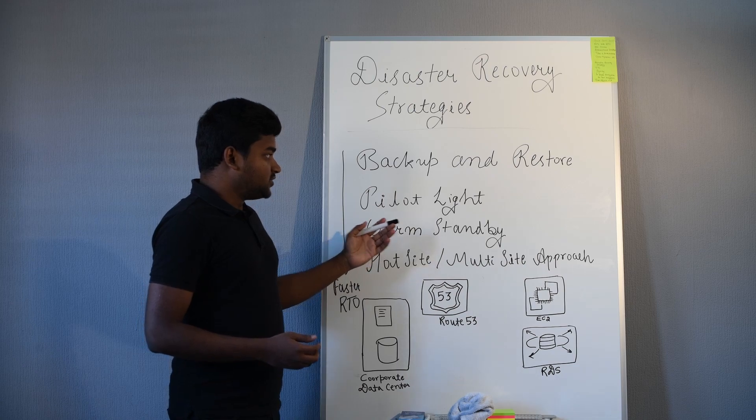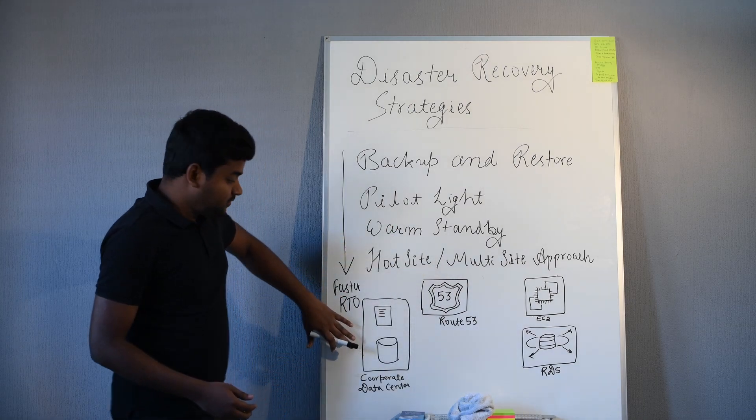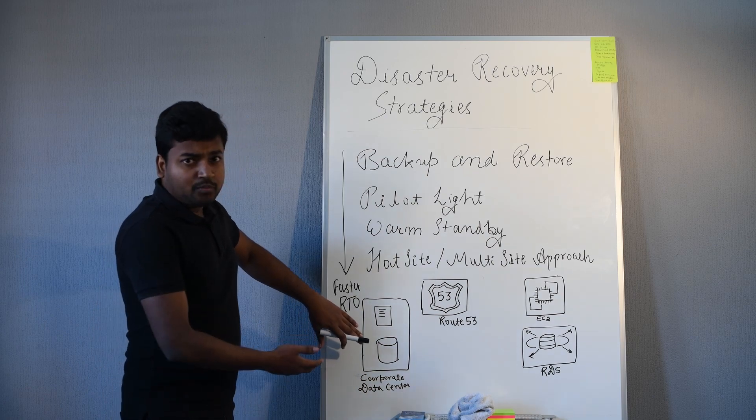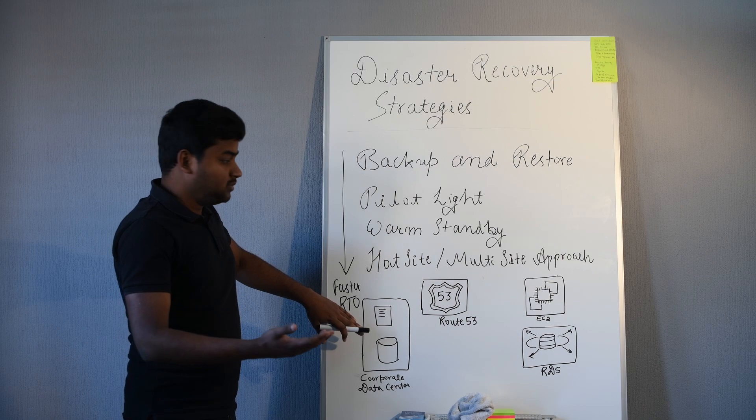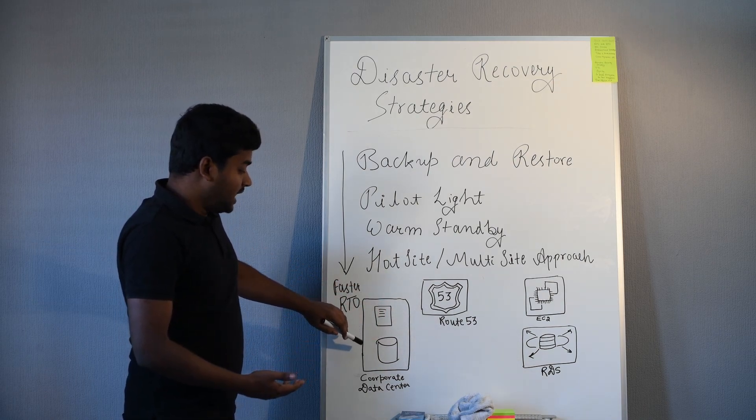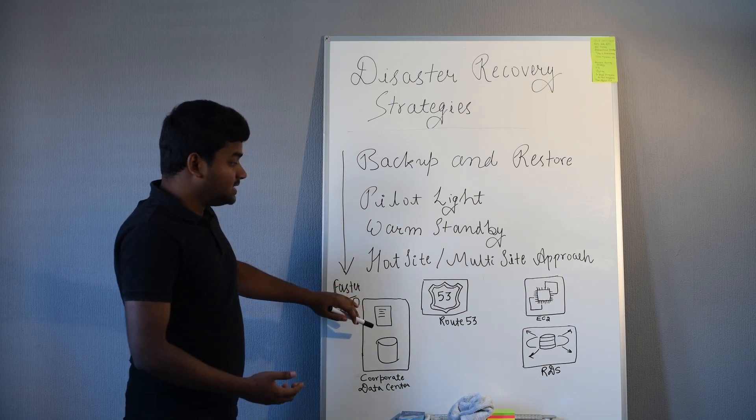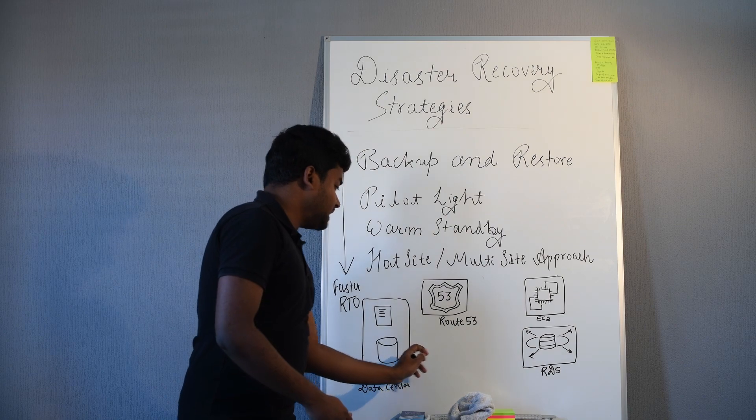What is the pilot light method? Pilot light strategy says that you have a corporate data center—it can be corporate or cloud depending on your infrastructure. I'm taking an example of corporate and cloud. You have a corporate data center and you have data, and you're taking backup to the RDS.